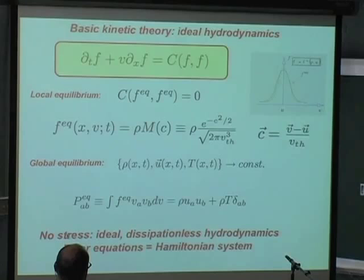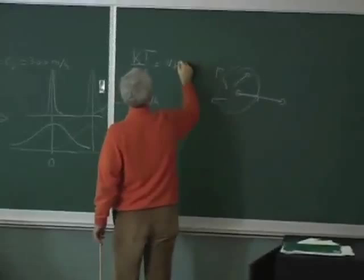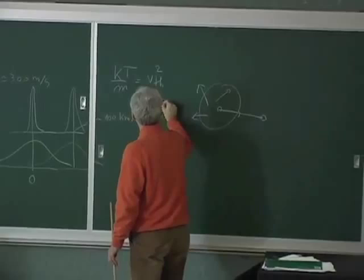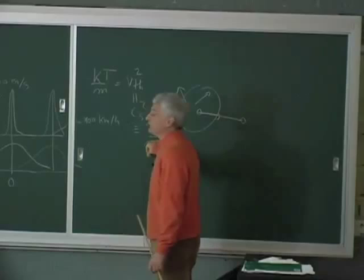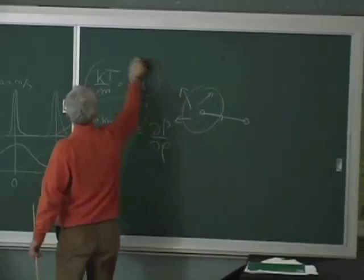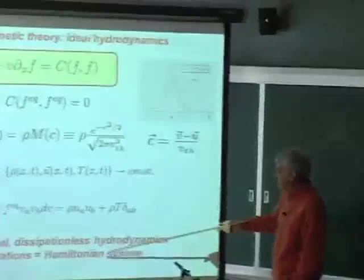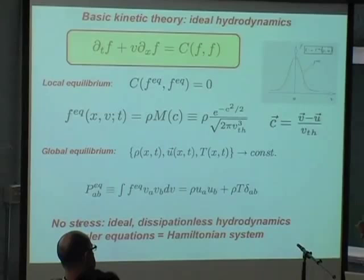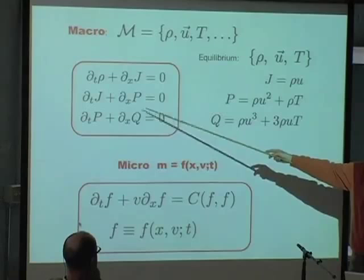The Euler equations are Hamiltonian because they have no dissipation — you can derive them from a Hamiltonian because you don't have any dissipation. These are conservative equations — you can derive them from either a Lagrangian or a Hamiltonian. The Hamiltonian is the total energy of the system. But there are collisions — that's the really subtle point. Collisions are there, but collisions are such that this distribution function is realized in zero time. So they are basically instantaneous.